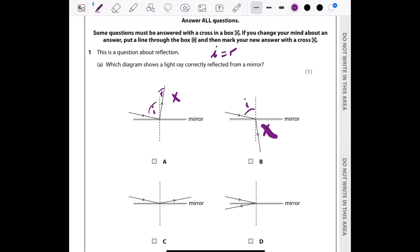For diagram D, this one is the angle of incidence, and here the normal works as a reflectant surface. This is definitely incorrect.